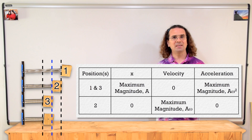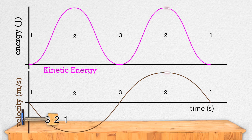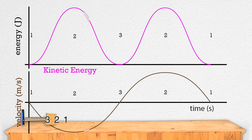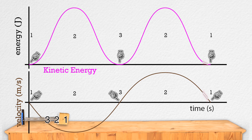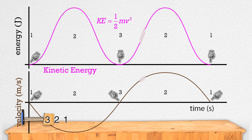Thank you Bobby. Now let's look at the kinetic energy of the mass in a frictionless horizontal mass spring system as a function of time. Billy, tell me what you see when you look at the kinetic energy graph. At positions 1 and 3, the kinetic energy of the mass equals zero. That is logical because the velocity of the mass is zero at positions 1 and 3, and kinetic energy equals one-half mass times velocity squared. So if the velocity is zero, which it is at positions 1 and 3, then the kinetic energy should also be zero.